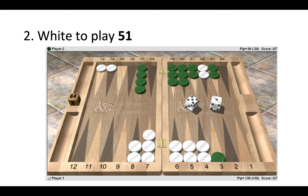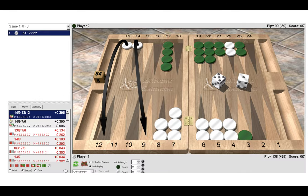Let's look at the second position. Here white has a five one to play. Again, it's zero zero in a match to seven. How does white choose to play this five one?